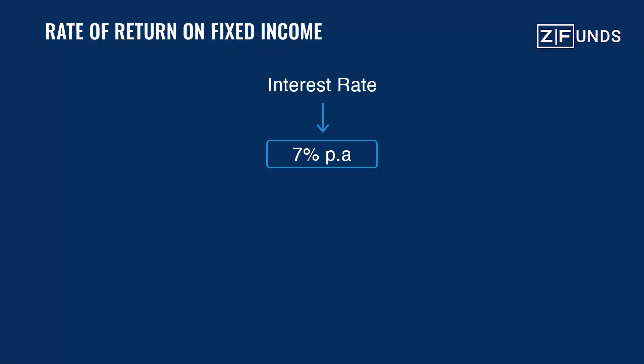When you invest in fixed income, you know how much return you will get. For example, if you invest in an FD and the bank tells you that you will get 7%, then you know upfront what your return will be. Fixed income can be seen as a loan — you are giving money to the bank, and the bank pays you interest.